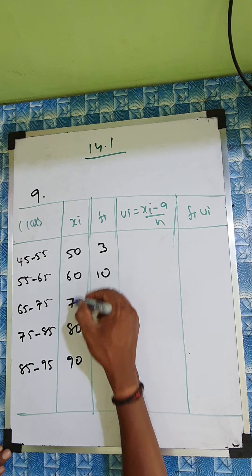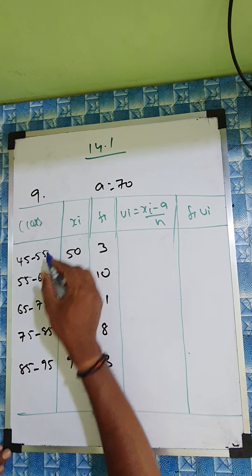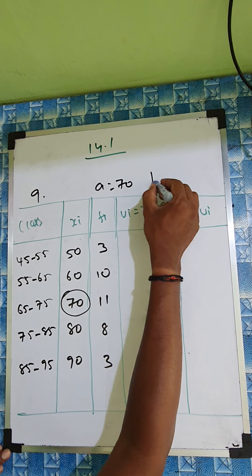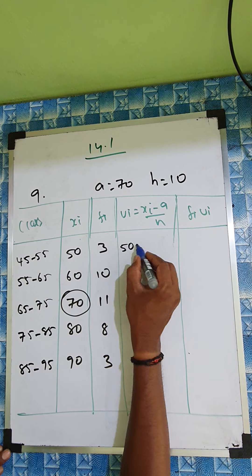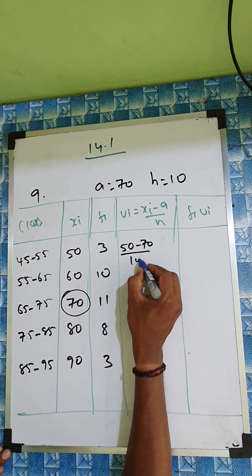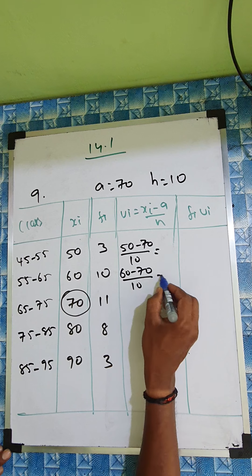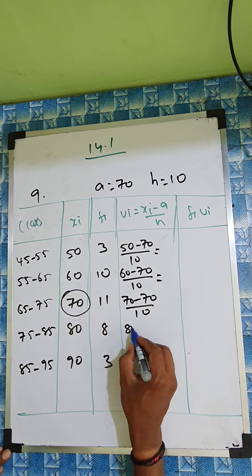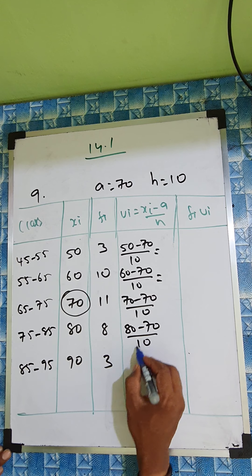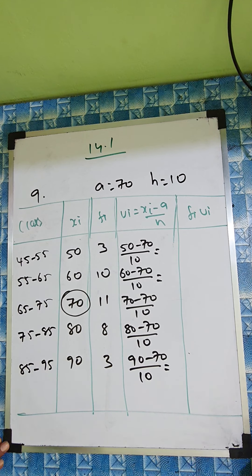And here a is one, two, one, two, three. A is 70. So a is 70 and h is 10. So we can write here: xi is 50 minus 70 by 10, and 60 minus 70 by 10, 70 minus 70 by 10, 80 minus 70 by 10, and 90 minus 70 by 10.